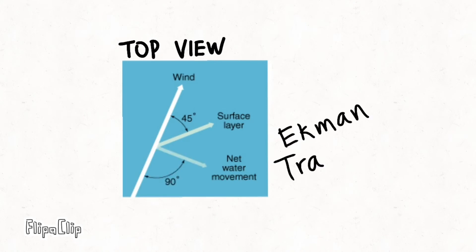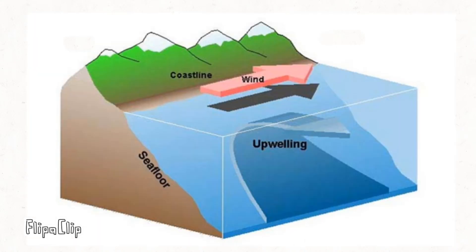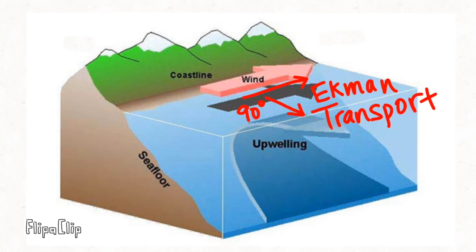This movement of water is called Ekman transport, and it's crucial for marine life in coastal areas. With winds blowing along the coast, the net water movement will be to the right because of Ekman transport. This allows for deeper, cooler, and more nutrient-rich water to reach these coastal areas and provide for marine life in a process called upwelling.